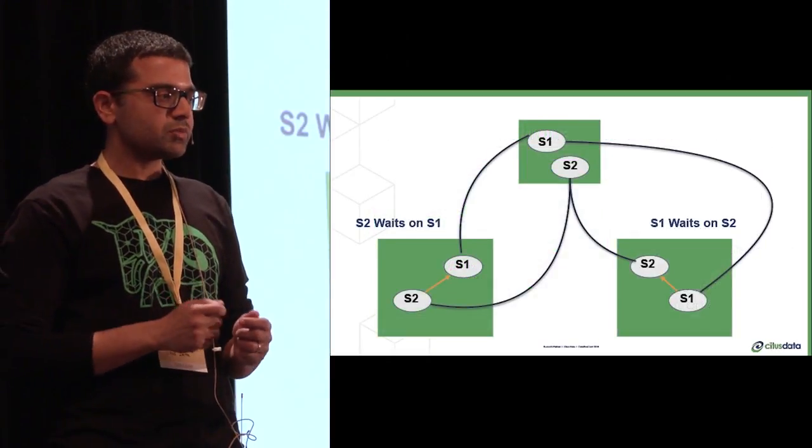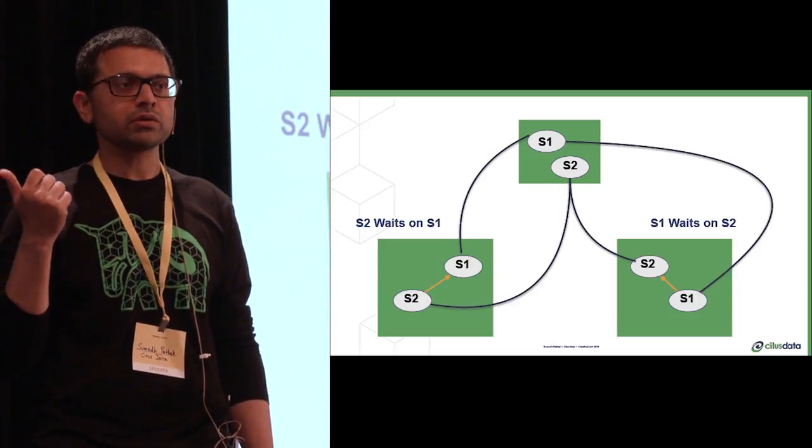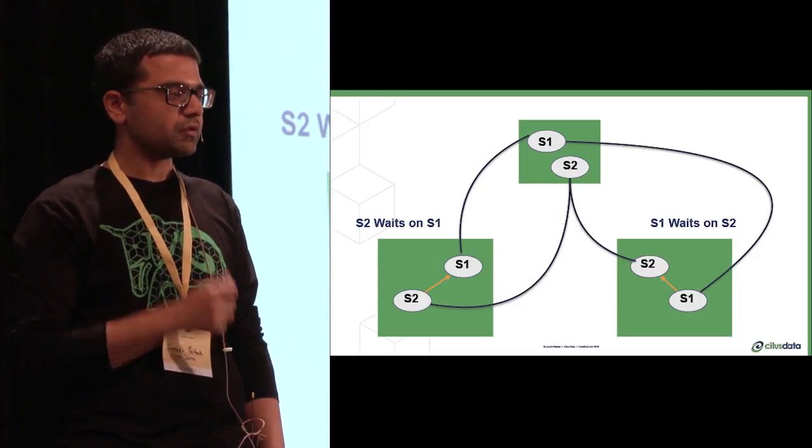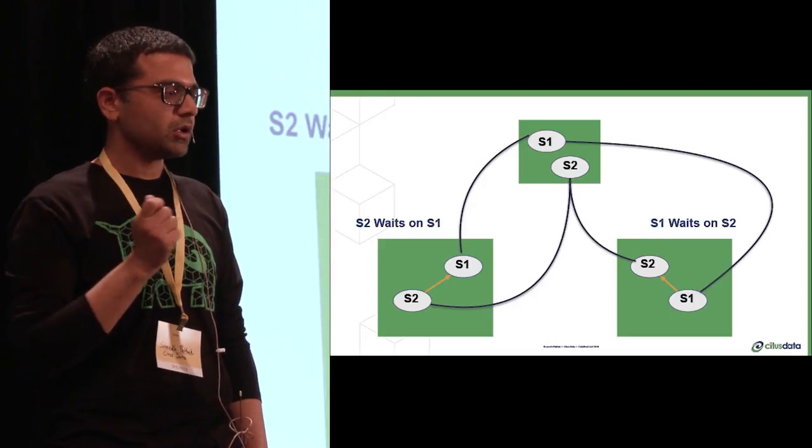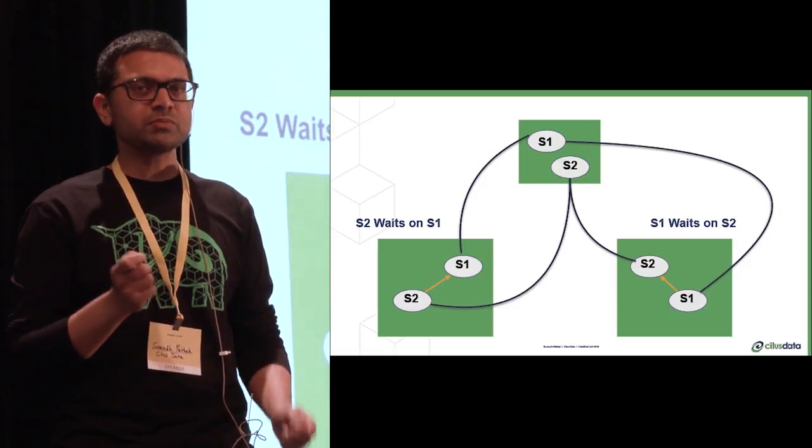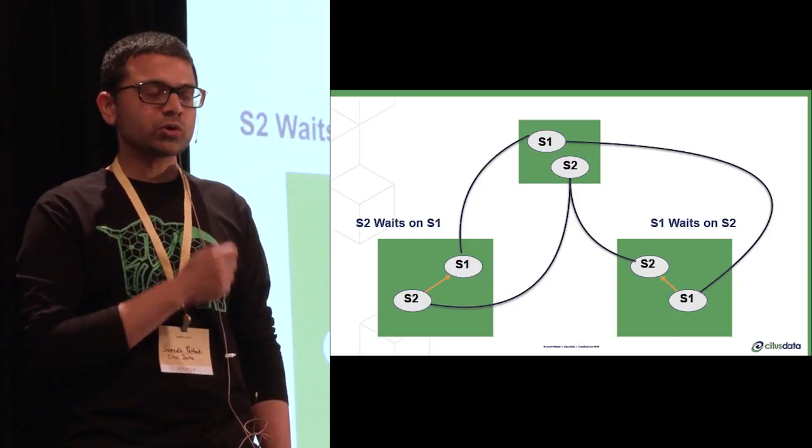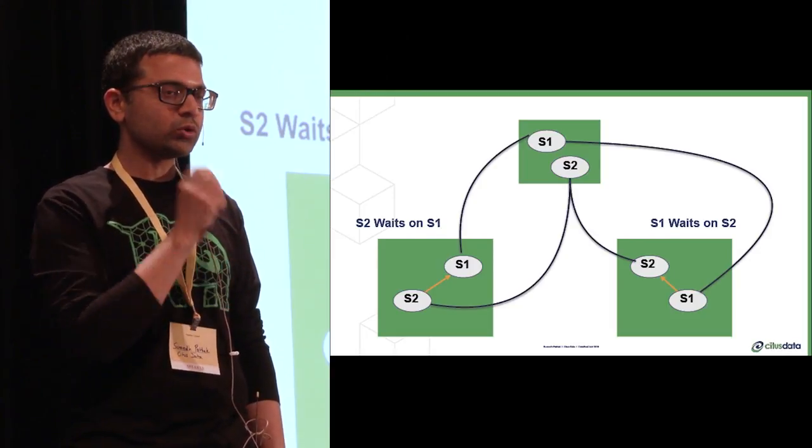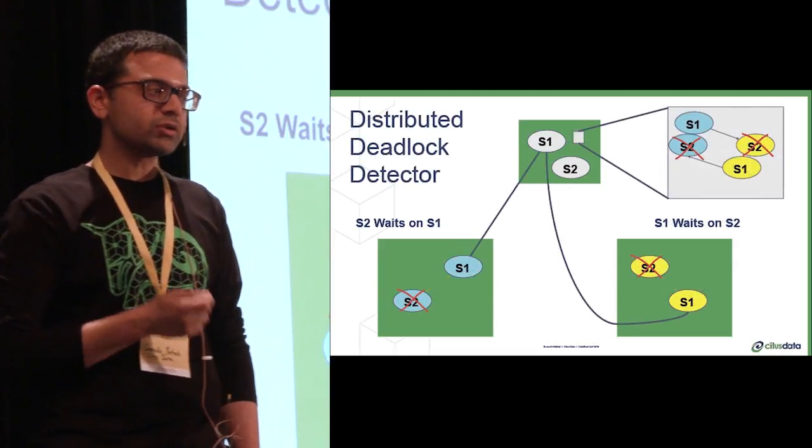But does that work in distributed environments? This actually shows what a deadlock would look like in the distributed database. If you look at any individual machine in this picture, there is no deadlock. On node one, session two waits on session one, but it doesn't seem to be blocked or anything else. So standard deadlock detection is not going to work by only looking at information on one node.